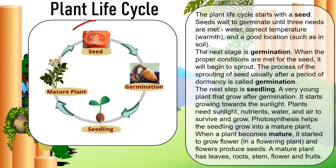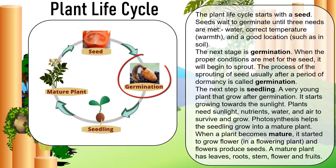The plant life cycle starts with a seed. Seeds wait to germinate until three needs are met: water, correct temperature and warmth, and a good location, such as in soil. The next stage is germination. When the proper conditions are met for the seed, it will begin to sprout. The process of the sprouting of a seed, usually after a period of dormancy, is called germination.